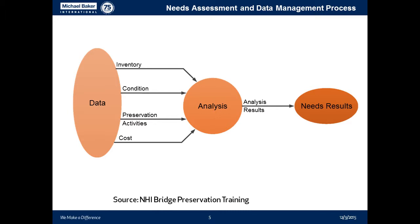This is just an example of what states can do — it's not a formula for success. Michigan decided to break the initial components a bit more, separating rehabilitation and replacement from preventive maintenance. But regardless of how you address those, in terms of the needs assessment, what you need is data: inventory, condition assessment, your preservation activities prescribed based on condition, and the cost.